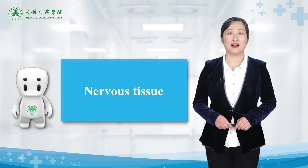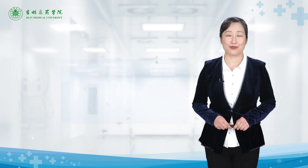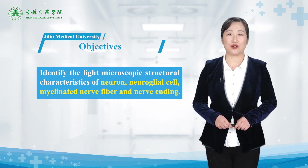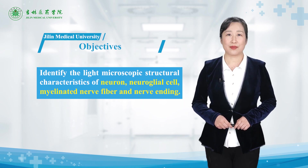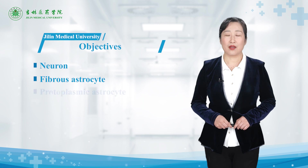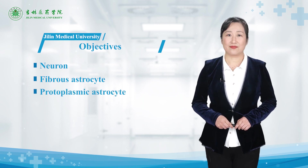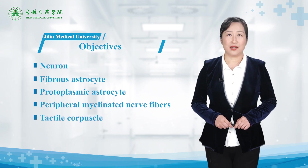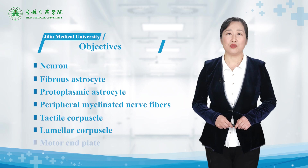we'll observe the histology slice of nervous tissue. Objectives: identify the light microscopic structural characteristics of neural and neuroglial cells, myelinated neural fiber, and nerve endings, including neural fibrous astrocytes, protoplasmic astrocytes, peripheral myelinated nerve fibers, tactile capsule, lamellar capsule, and motor end plate.